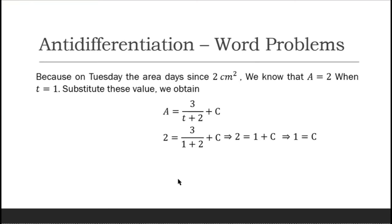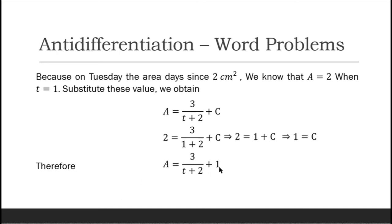So finally, our complete equation is A = 3/(t + 2) + 1. Now we have our equation to answer both remaining questions.